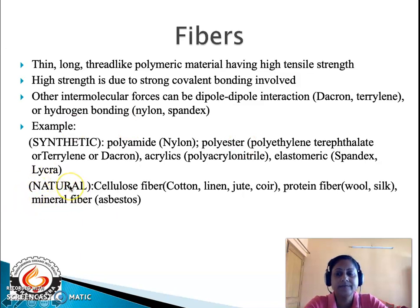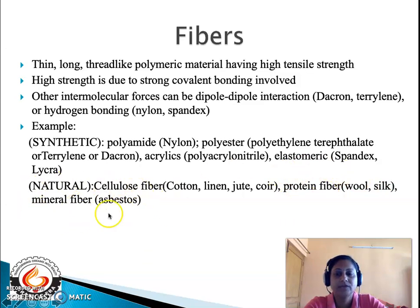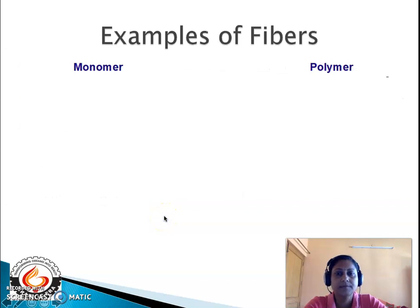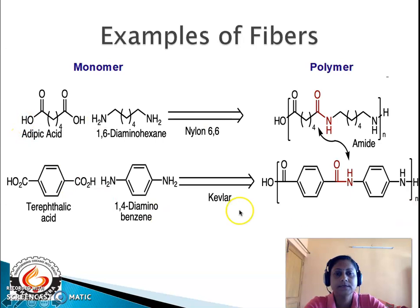Natural fibers seen in day-to-day life include cotton, linen, jute, and coir, which come under cellulose fibers; wool and silk, which come under protein fibers; and asbestos, which comes under mineral fibers. Asbestos is not organic-based but mineral-based, yet it is also classified as a fiber.